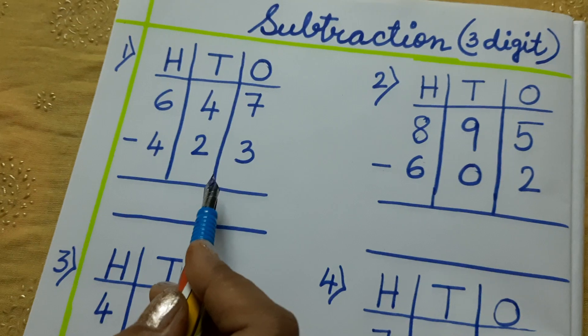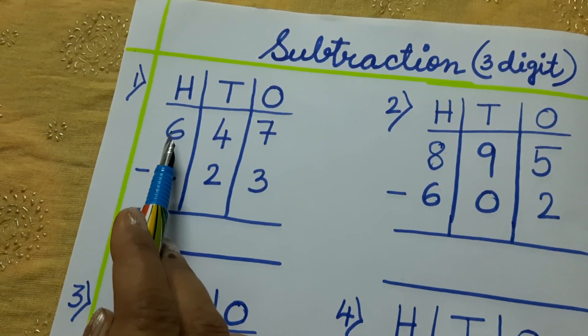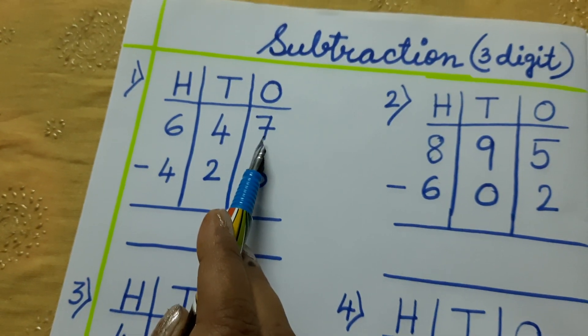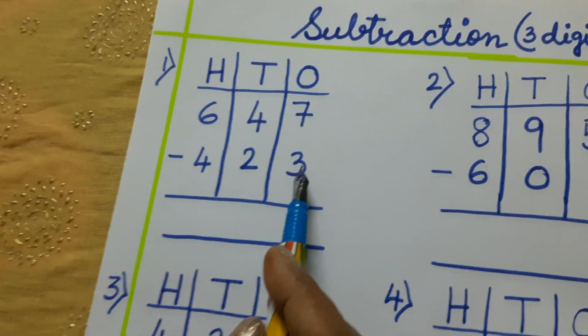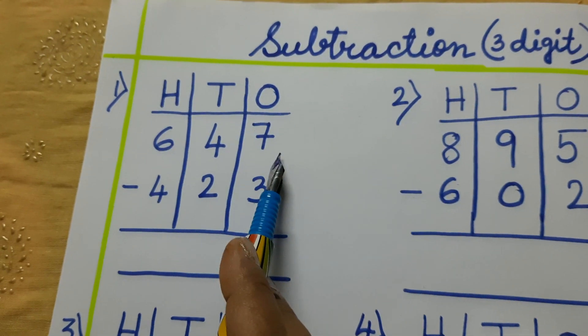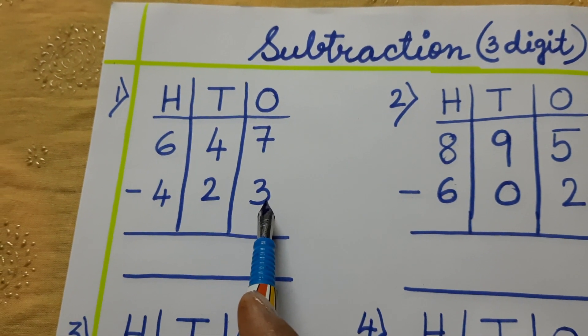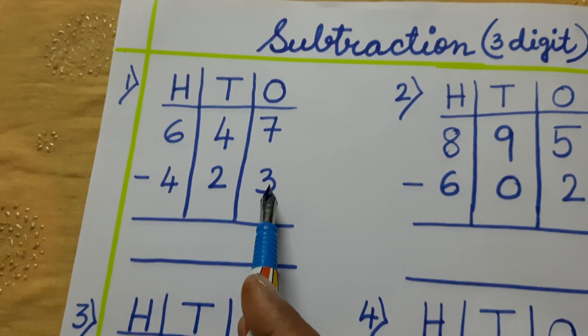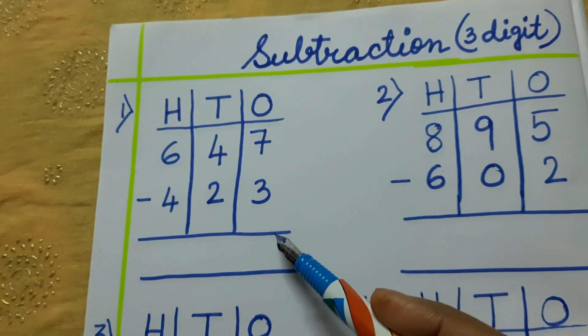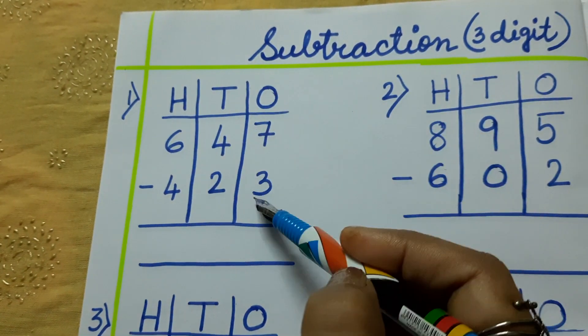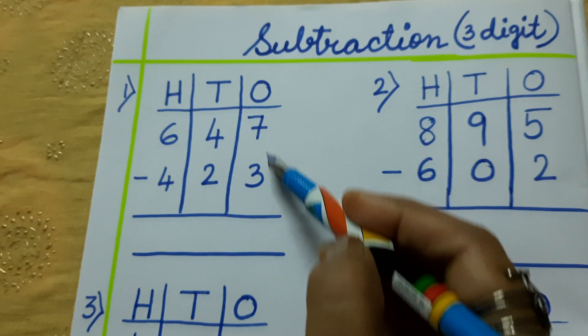Let us do the sum with finger scanning. 647 minus 423. That is 647, 423. So, from which side we are going to start? From the 1s room. 1s, 10s, 100. Always start from 1s.